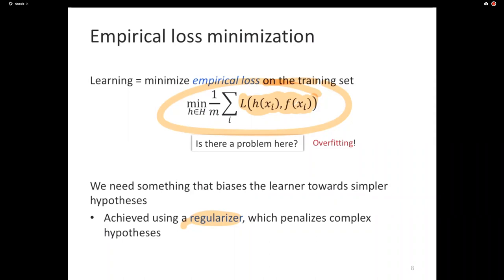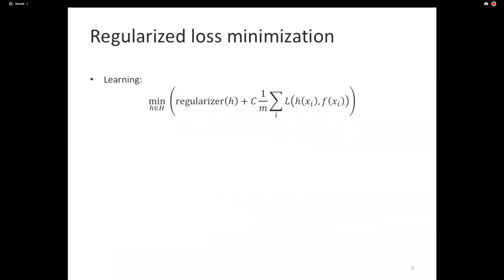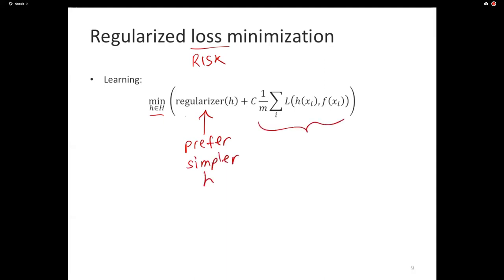A natural way of minimizing two things is to minimize their sum. That gives us what's called regularized loss minimization, or regularized risk minimization. We are minimizing, over all hypotheses in some hypothesis space, the sum of two things. The regularizer says prefer simpler hypotheses, and the second term says prefer correct — prefer the hypotheses that look more like F.